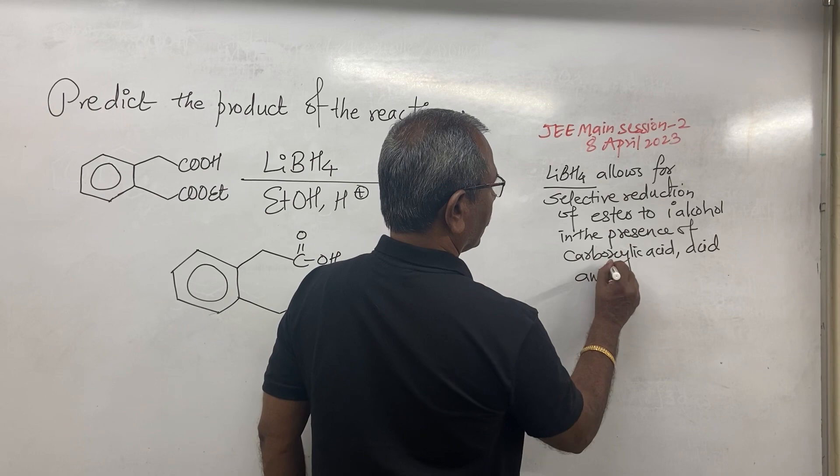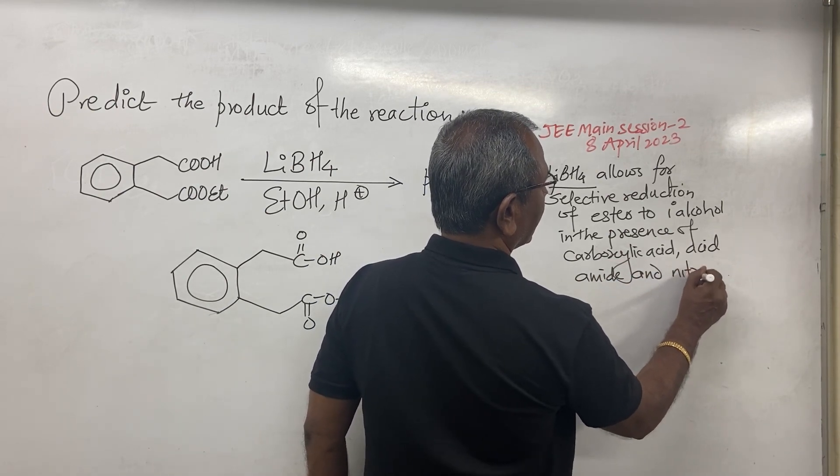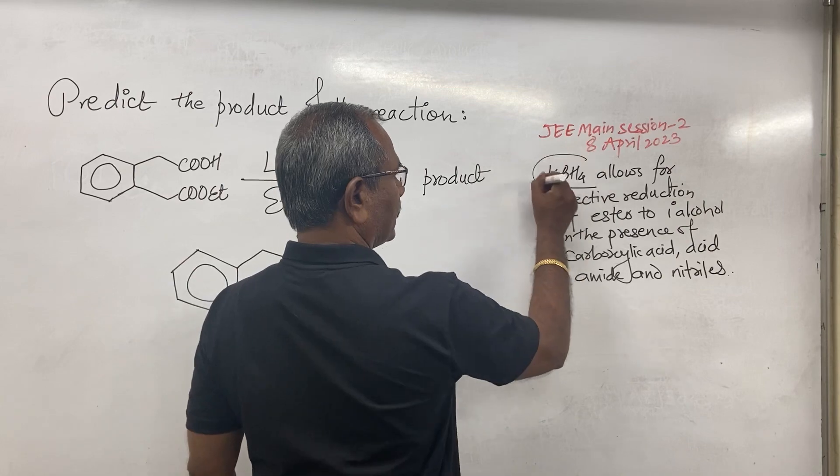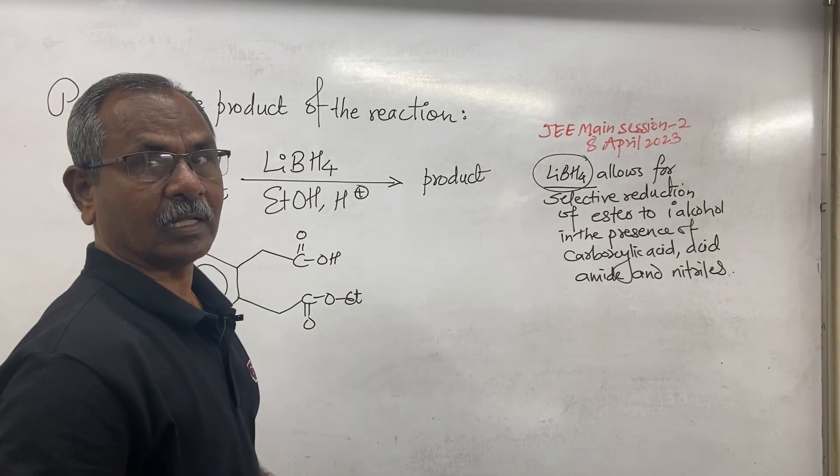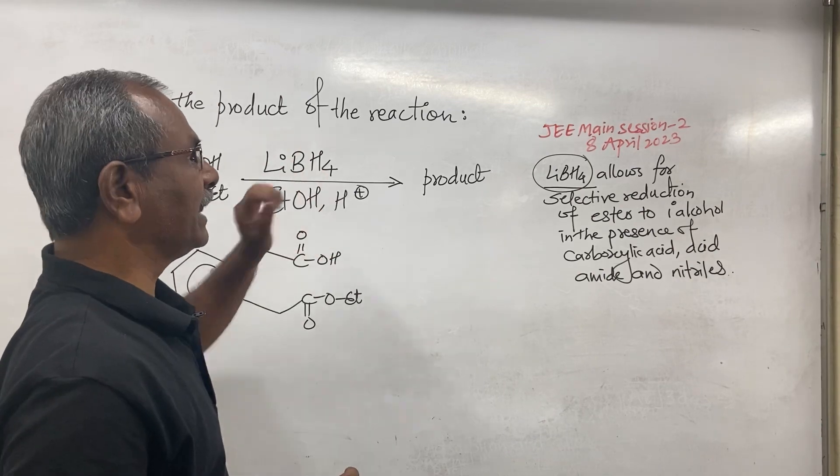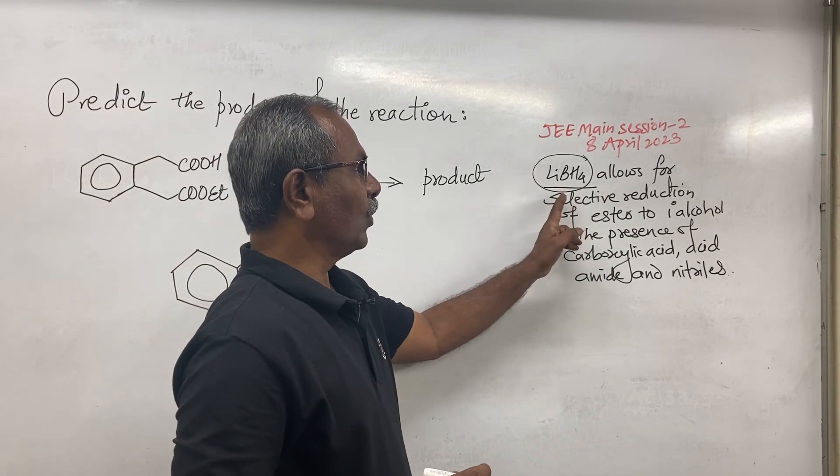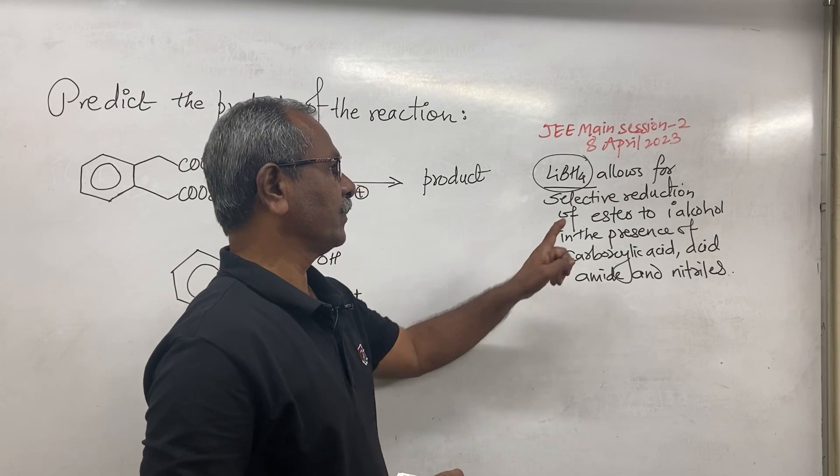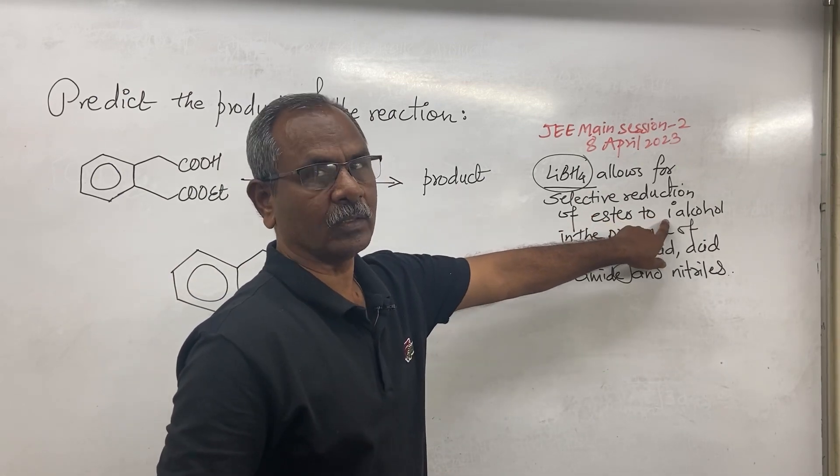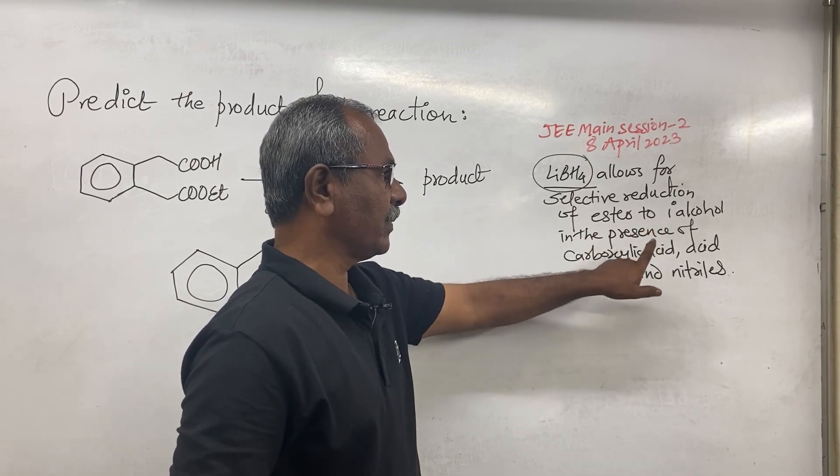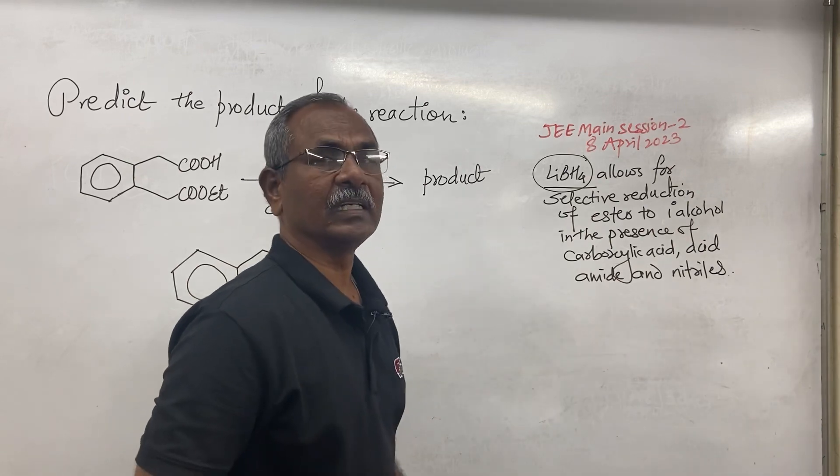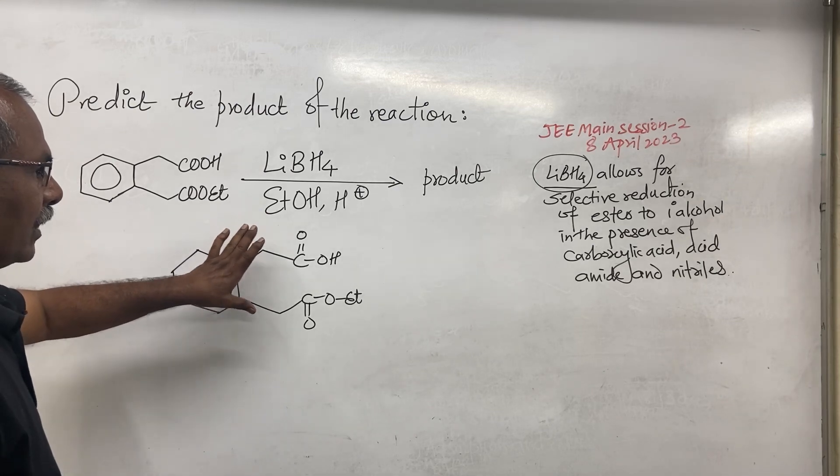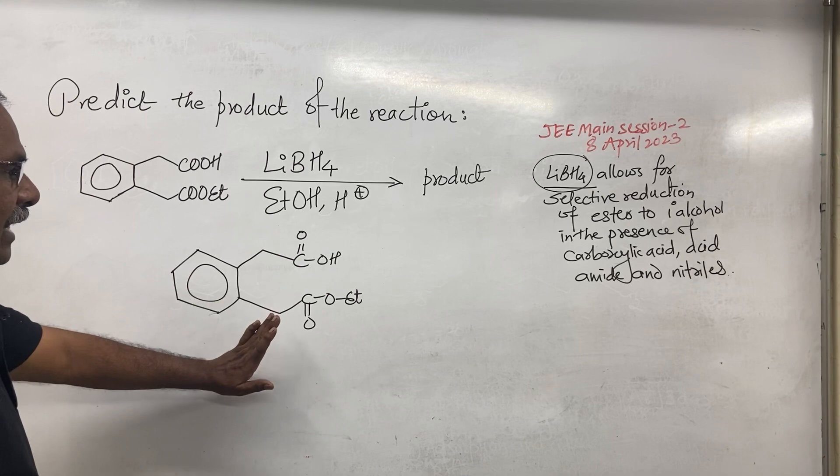Amide and acid nitriles. So this reagent is not normally or regularly used in organic reactions. Lithium borohydride is a selective reducing agent because it reduces ester group to primary alcoholic group in the presence of carboxylic acid, acid amides, or nitriles. Here in the reaction, this reactant contains acid group, that is the carboxylic acid group, and ester group.